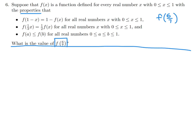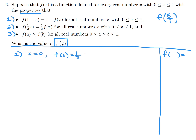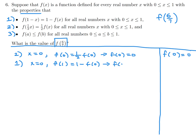I'll keep a tally of values. Label the properties 1, 2, and 3. Using property 2 with x = 0: f(0) = (1/2)f(0), so f(0) = 0. Then using property 1 with x = 0: f(1) = 1 − f(0) = 1. Using property 1 with x = 1/2: f(1/2) = 1 − f(1/2), so f(1/2) = 1/2.